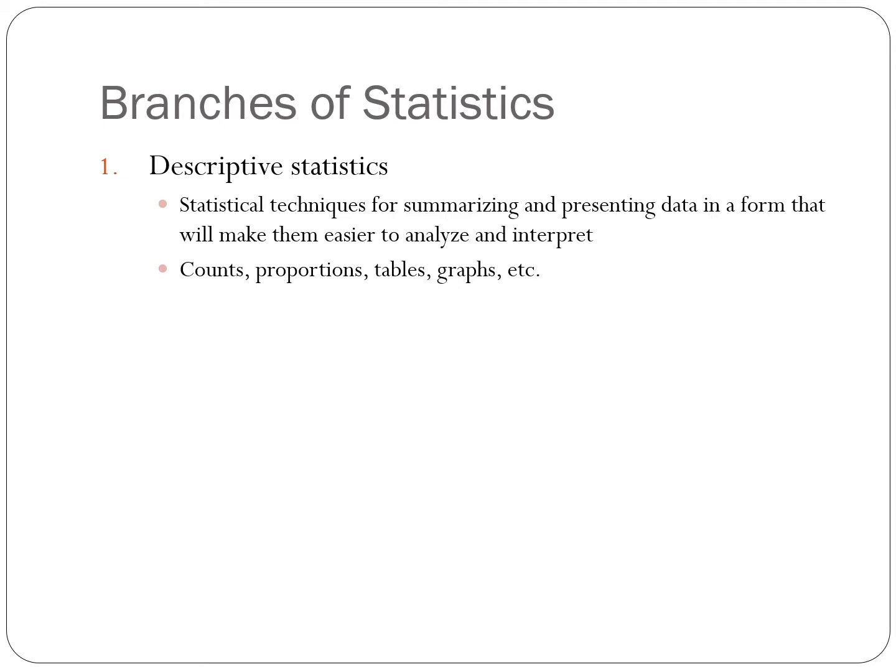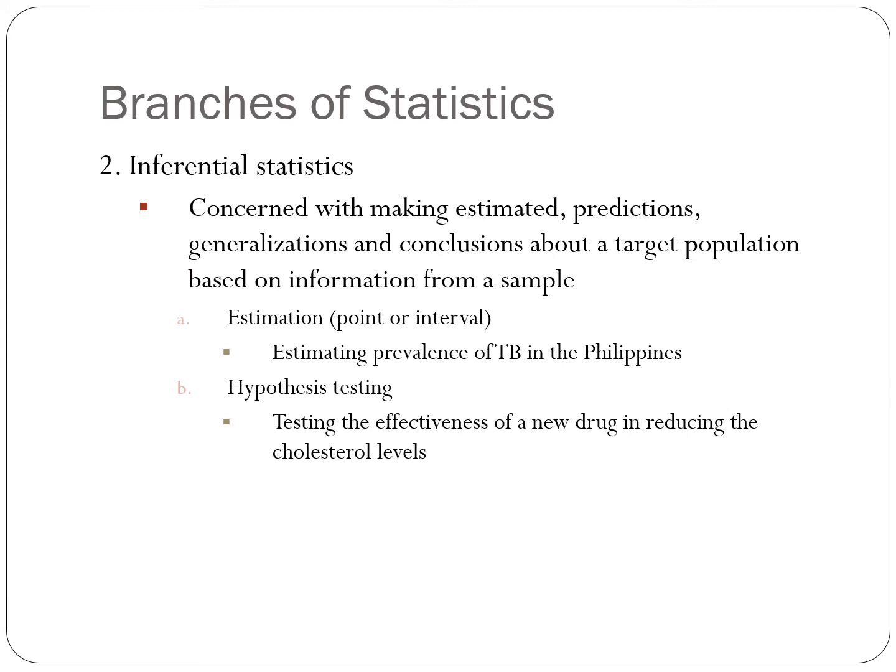We have branches of statistics. Descriptive statistics are statistical techniques for summarizing and presenting data in a form that will make them easier to analyze and interpret — this would include counting, proportions, use of tables and graphs, etc. Inferential statistics are concerned with making estimates, predictions, and generalizations and conclusions about a target population based on information from a sample. It would include estimations, hypothesis testing, etc.